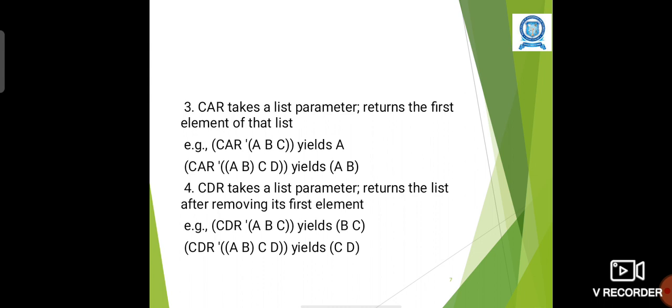CDR is another command which takes a list parameter and returns the list after removing its first element. So CDR is the reverse operation of CAR. CDR will remove the first element and produce the remaining elements. For example, CDR of apostrophe (A B C) yields (B C).